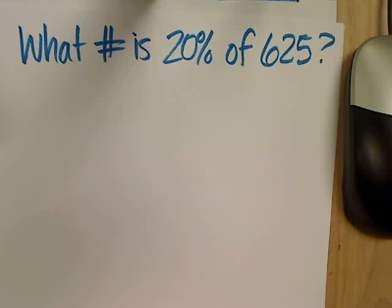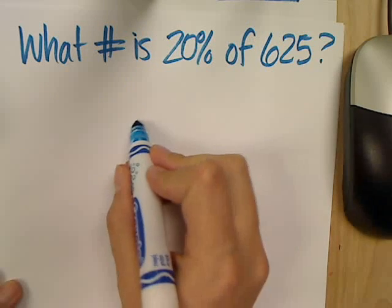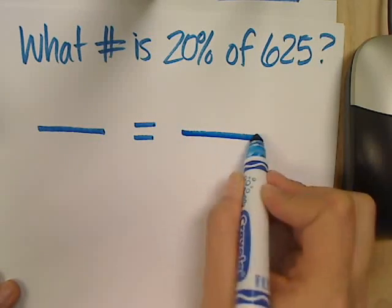Okay, so this one says, what number is 20% of 625? We're still going to set up a proportion, one ratio equal to another ratio.